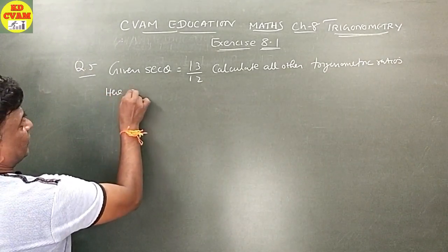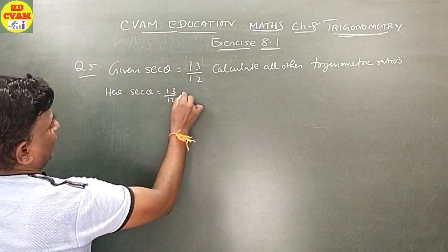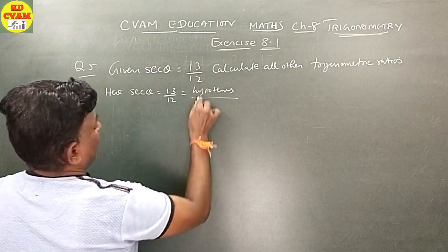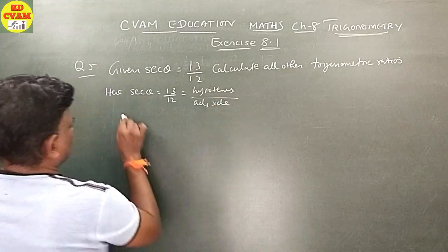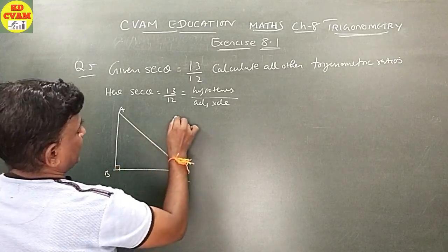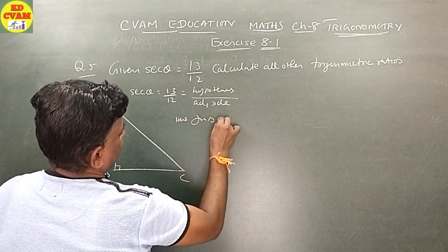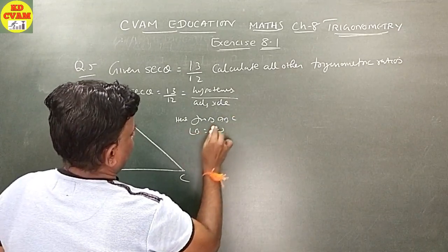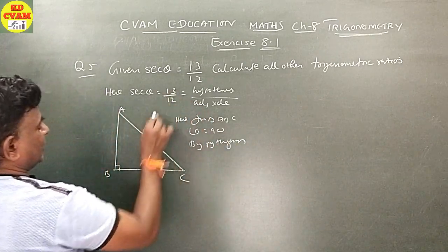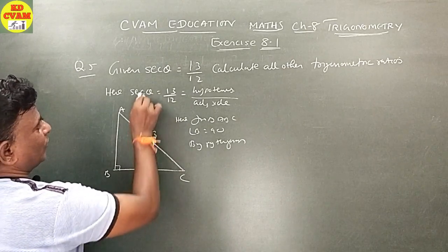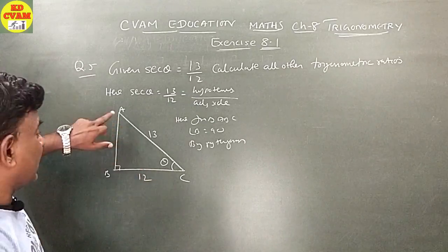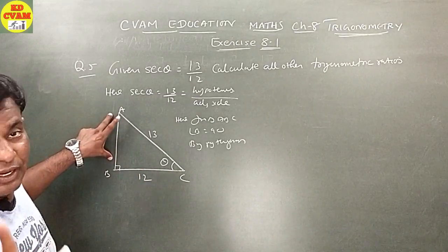Sec theta is equal to 13 upon 12. Sec theta equals hypotenuse upon adjacent side. Taking triangle ABC with angle B equal to 90. Hypotenuse AC is 13 and adjacent side BC is 12. Placing theta at angle A. We need to find the opposite side AB.